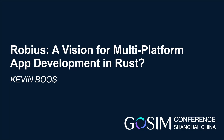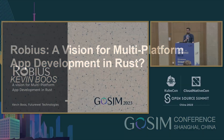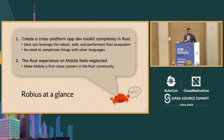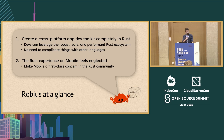Today I'm going to talk about our brand new vision for multi-platform application development in Rust, which we have tentatively named Robius. Our goal for this vision is to create a multi-platform app dev toolkit completely in Rust, with the goal that developers would be able to leverage the robust, safe, and performant Rust ecosystem.